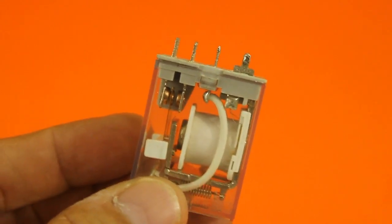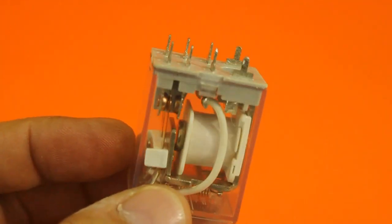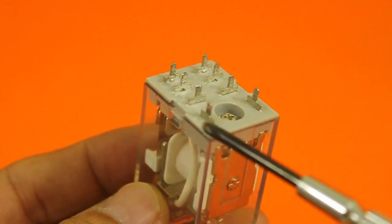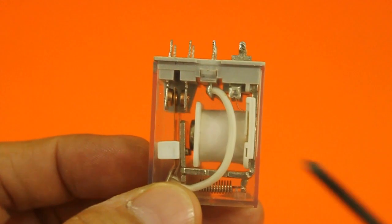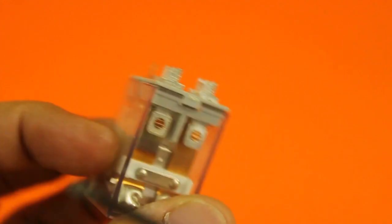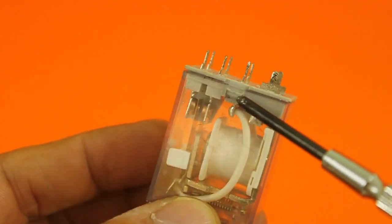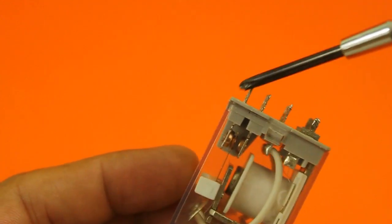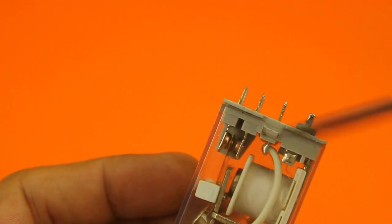For this project we need a double pole double throw relay or DP-DT. These relays have two terminals to energize the coil and two sets of contacts. The contacts have a common terminal, the white wire, and the normally closed contact and the normally open contact.